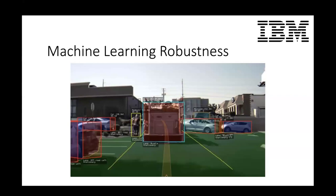Why do we care about robustness? Robustness is really important — it's one of the foundations of machine learning. You need robustness in order to gauge how well your model performs in an online environment. Essentially, if you do not have a strong, robust system within your ML model, you might see a difference between your training and your testing environment.